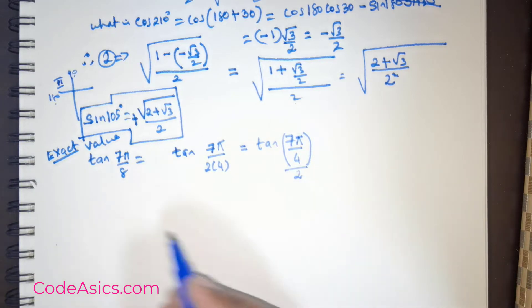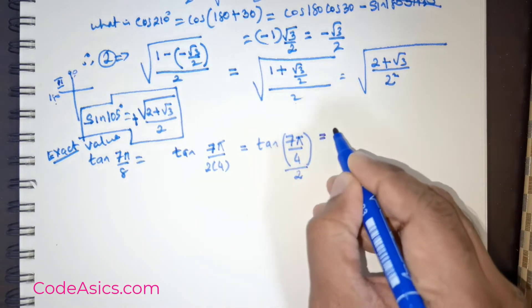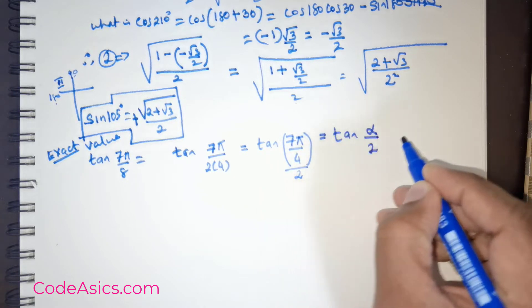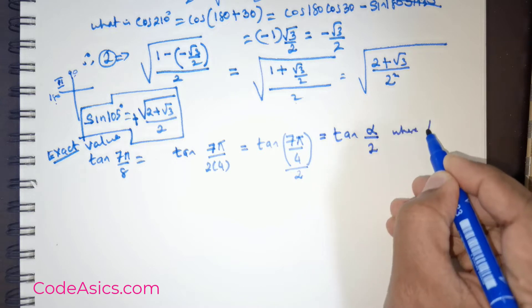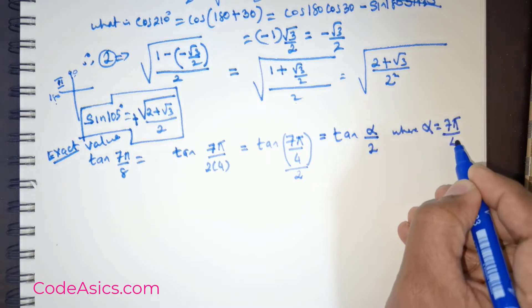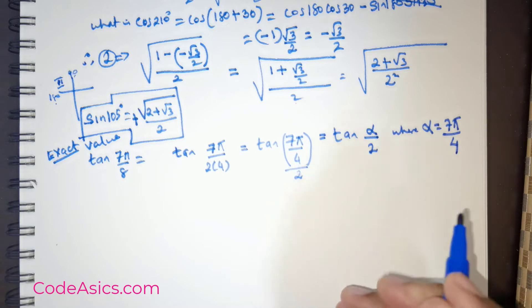So 2 is actually 2 over 1. When you flip it, you are going to get 8 there. Now this is equal to tan α/2 where α is 7π/4.